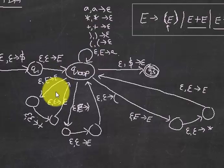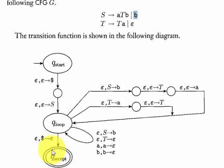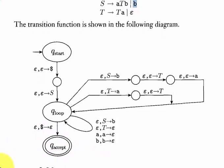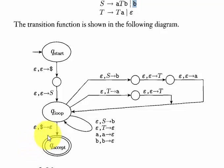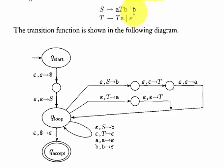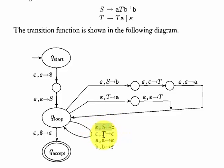This is how you convert a CFG to a PDA following these rules. When you have just a terminal alone in the production, all you have to do is replace the variable with that terminal.